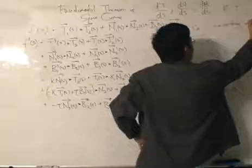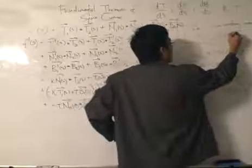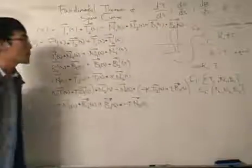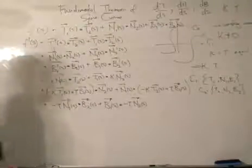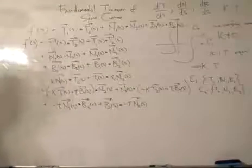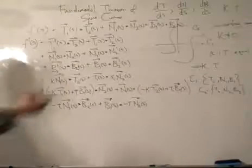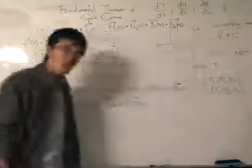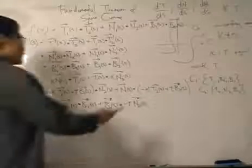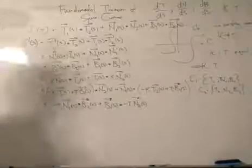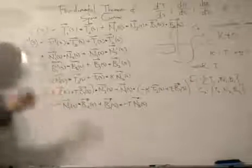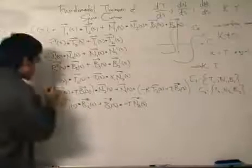We also assume this is a non-vanishing curve, meaning kappa does not equal zero — because if kappa equals zero, the unit normal and unit binormal cease to exist and we can't prove anything. So kappa is not equal to zero; it's continuous throughout the whole curve, and the curve is non-vanishing. With kappa and torsion being equal, we can cancel things together.